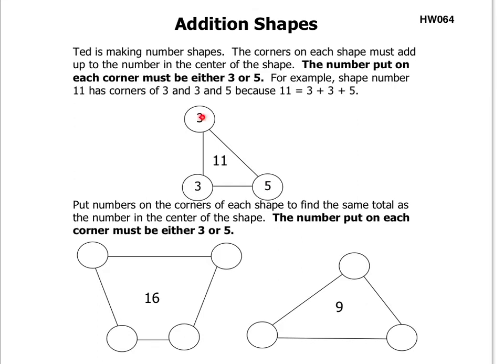Put numbers in the corners of each shape below to find the same total as the number in the center of the shape. The number put on each corner must be either 3 or 5. Don't use other numbers; you're only supposed to use a 3 or 5.